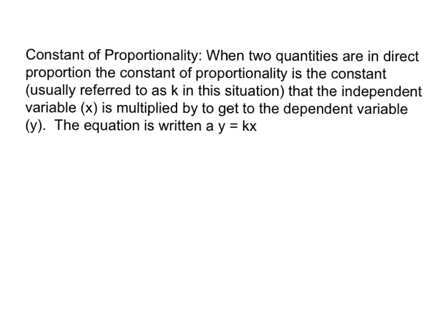So the constant of proportionality is when you have two quantities that are in direct proportion. This only works if your quantities are in direct proportion. You can't find a constant of proportionality unless your quantities are in direct proportion.